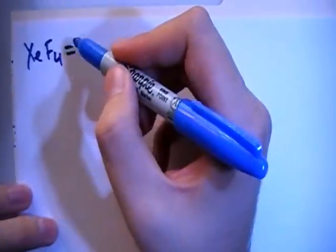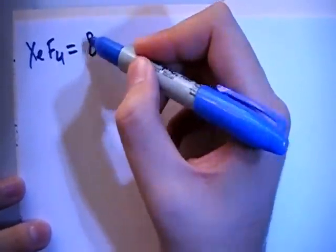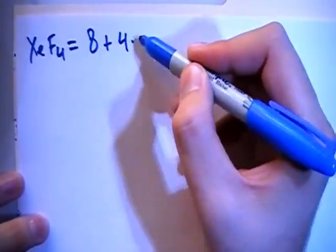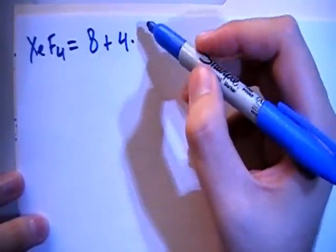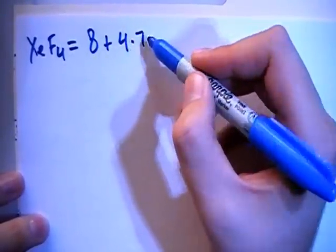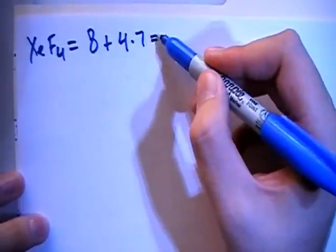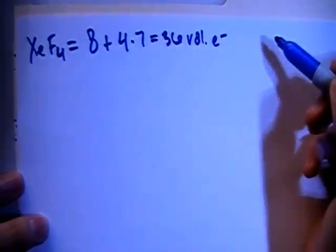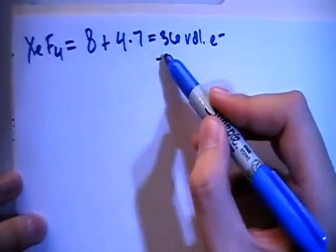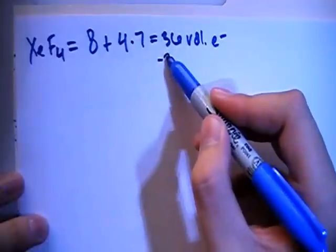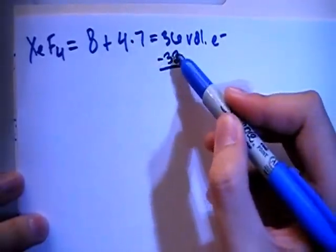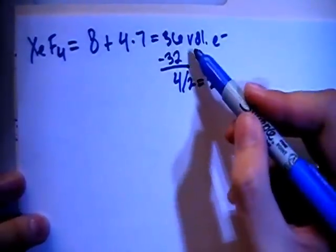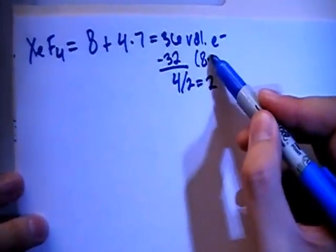So that's going to give us a total of 8 valence from the xenon, 8 valence electrons plus 4 fluorines, each with 7 valence electrons, for a total of 36 valence electrons. And we can subtract out the largest multiple of 8, which is going to be 32, leaving us with 4 electrons remaining. Divide that by 2, it gives us 2. And 32 is 8 times 4.